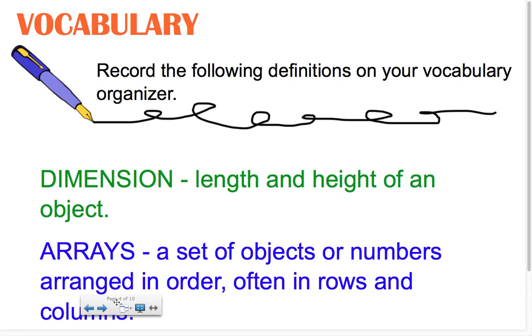So what we need to do is make sure that we record our two new vocab words for this week. We need to record on our organizer the word dimension, which is the length and height of an object, and arrays, which is a set of objects or numbers arranged in order, often in rows and columns. Go ahead and take out your Unit 5 vocab organizer and record these definitions. You can pause this video while you're recording the definitions, and then when you're ready to go on to the next part, come back and push play.